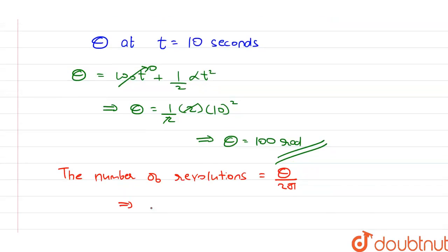This implies n is equal to 100 divided by 2 pi, which is equal to 16 revolutions. This is the answer to our question.